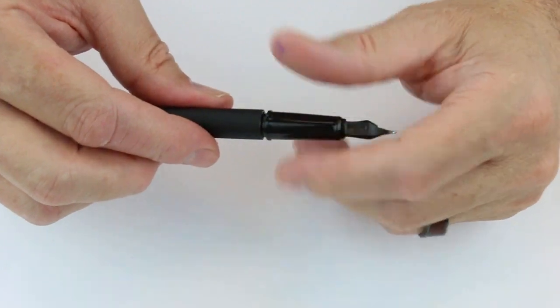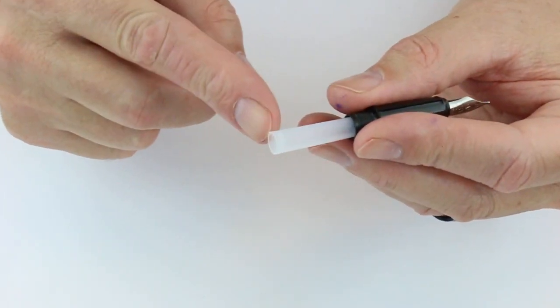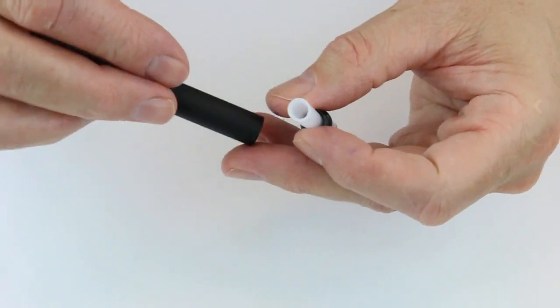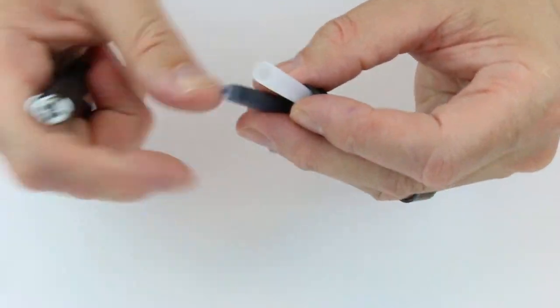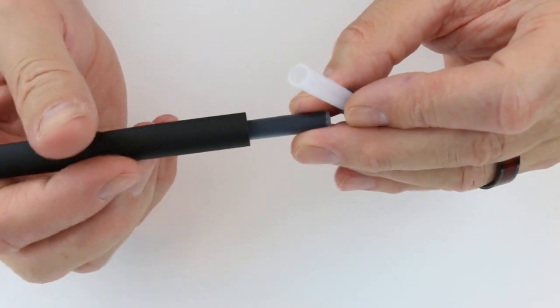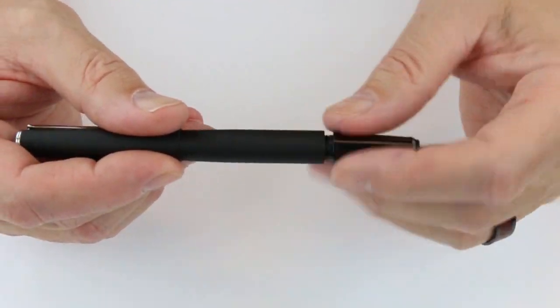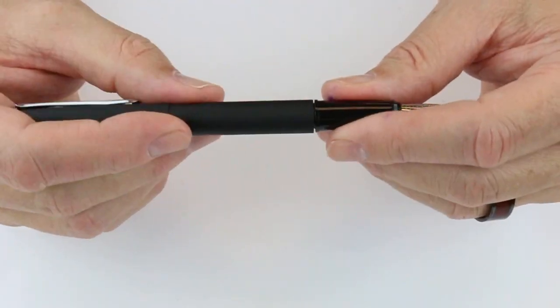It is a cartridge style fountain pen so you can unscrew the section. There's a small holder here but also included in the barrel will be a standard international ink cartridge. You could add a converter to this pen as well if you wanted to, but it is not included if you want to use bottled inks.